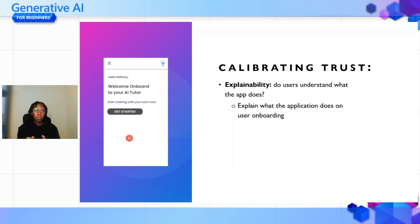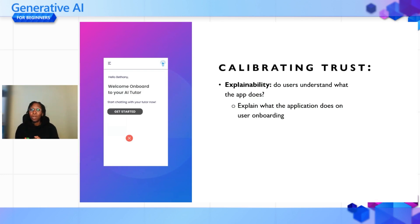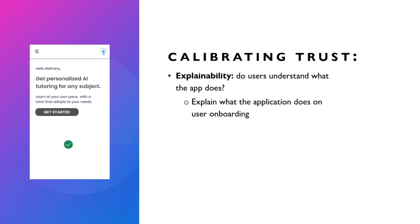So how do you calibrate trust? There are two main ways. The first is explainability — how does the application work, and does the user understand what it does? For example, an onboarding message that says 'Welcome to your AI tutor' doesn't tell users what it can do. But if you phrase it as 'Get personalized AI tutoring for any subject,' it gives a much clearer idea of what the application does.